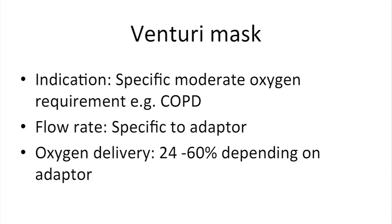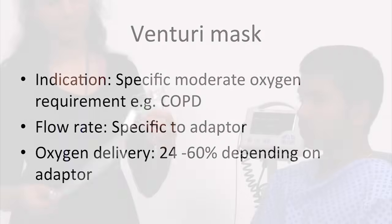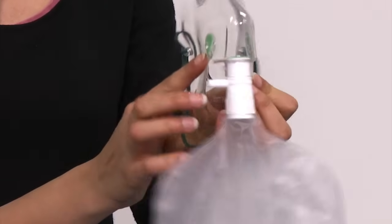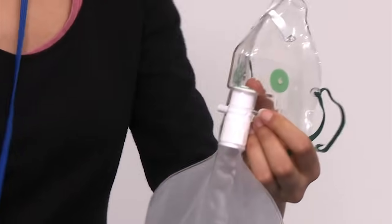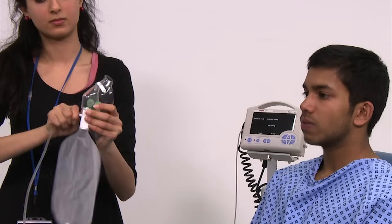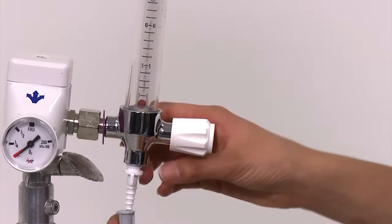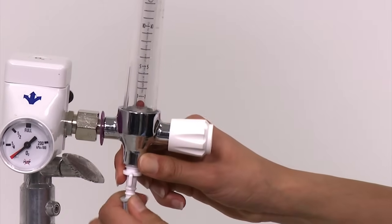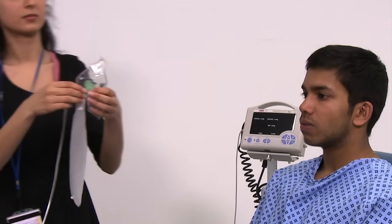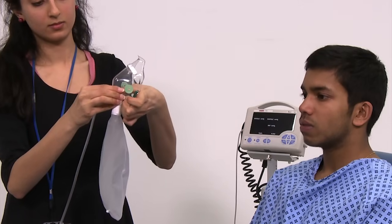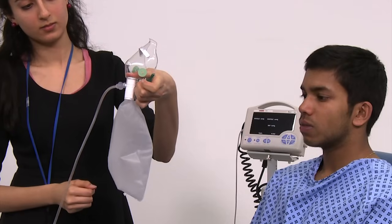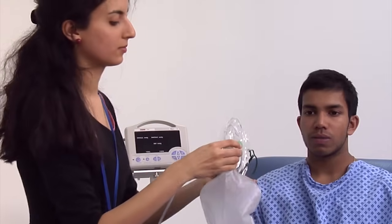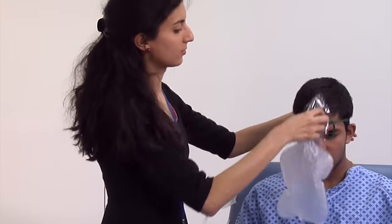If the patient continues to deteriorate or has arrived in a critical condition, a non-rebreathing mask is used to deliver high concentrations of oxygen. This has an attached reservoir bag and one-way valves, which allow oxygen concentrations of 60 to 80% to be achieved. The flow rate is adjusted to between 12 and 15 litres per minute. The valve between the face mask and reservoir bag needs to be pressed in order to fill the bag up. It can then be adjusted to fit over the patient's nose and mouth, similar to the previous face masks.